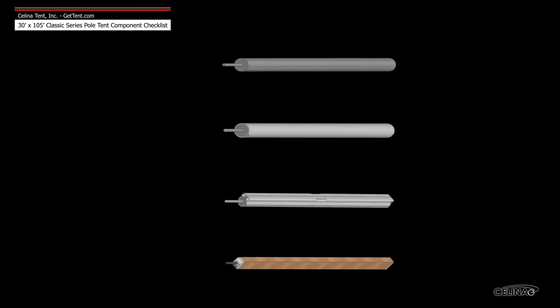Celina side poles are available in four types: galvanized steel, anodized aluminum, anodized aluminum keder track, and wood.